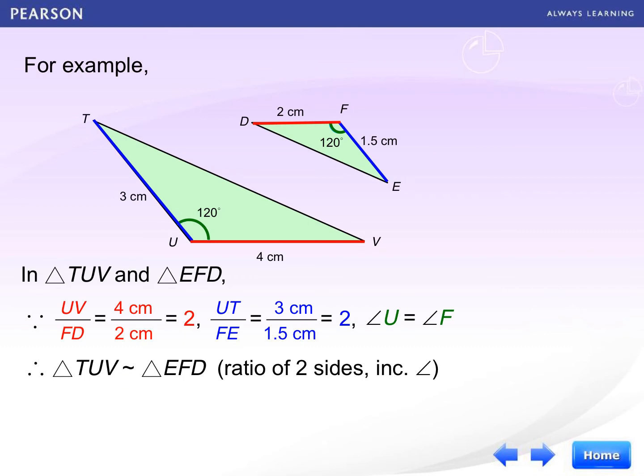Therefore, triangle TUV is similar to triangle EFD. This is the case of ratio of two sides included angle.